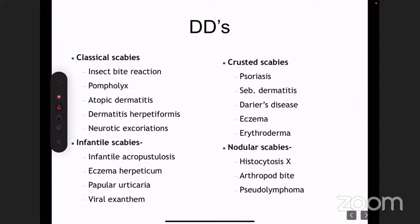It's usually a pretty straightforward diagnosis, but especially in infants, we need to rule out things like infantile acropustulosis and papular urticaria — or simply, insect bite reactions or atopic dermatitis. Crusted scabies has more differentials because it's not a straightforward diagnosis — thick hyperkeratotic plaques could be eczema, psoriasis, or seborrhoeic dermatitis. If unsure, you can do a scraping or demonstration of the mite under the microscope.